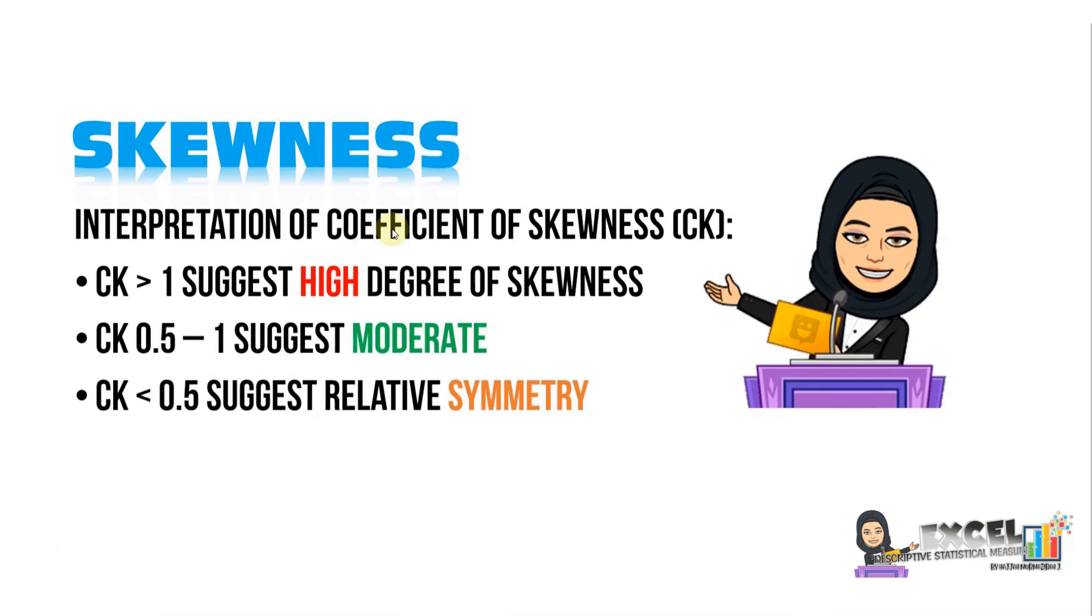The interpretation depends on the coefficient of skewness. When a result is more than one, it refers to a high degree of skewness. 0.5 to 1 is moderate, and less than 0.5 is relatively symmetrical.